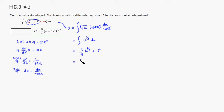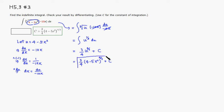Now we put the original expression back in. Since u equals 4 minus 5x squared, the answer is three over four times the quantity (4 minus 5x squared) raised to the four-thirds power, plus c.